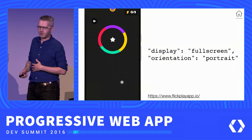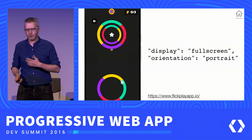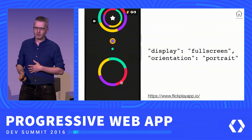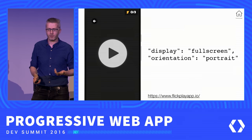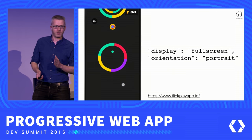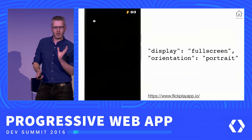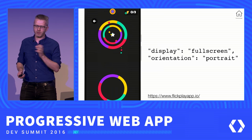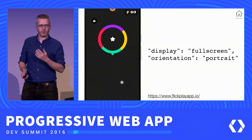Another app is called Flickplay, at flickplayapp.io, made by Chinese developers. They were really excited about the potential of progressive web apps. They're using display fullscreen and orientation portrait, locking the game in portrait mode. They can offer a really immersive experience — it's also really smooth. It's barely noticeable that you're using this game inside a web browser. It feels like a totally native app.